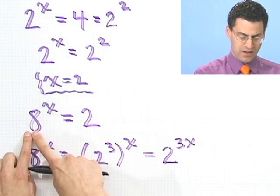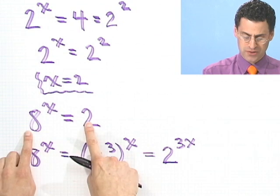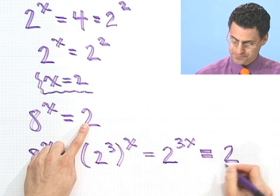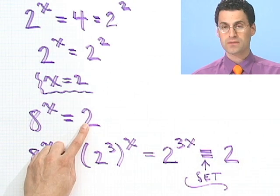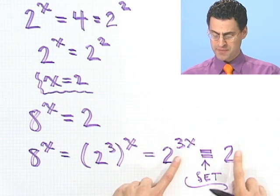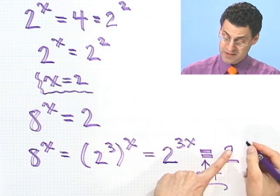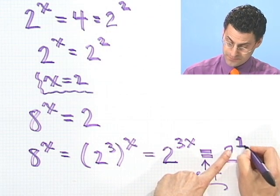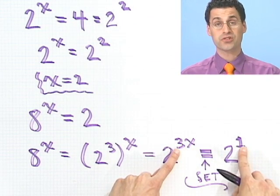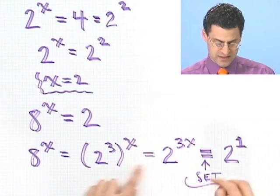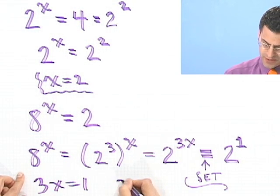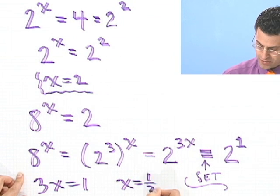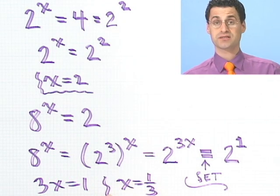Now, what do I know? I'm setting that number equal to 2. So if I set this equal to 2, then if the bases are the same, the exponents must be the same. Well, there's an invisible 1 exponent here, so I see 3x equals 1. So if 3x equals 1, if I divide both sides by 3, I see x equals 1 third.